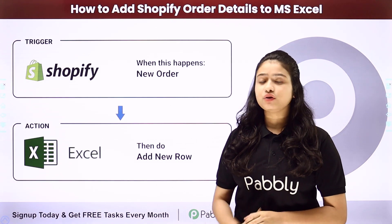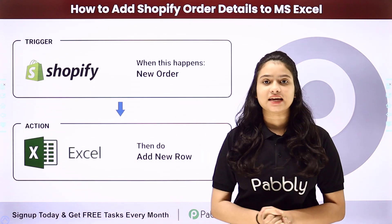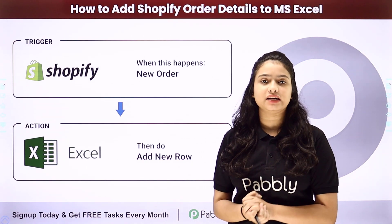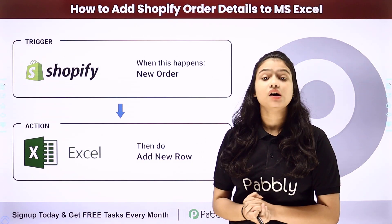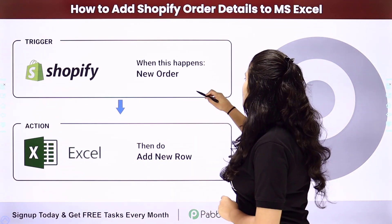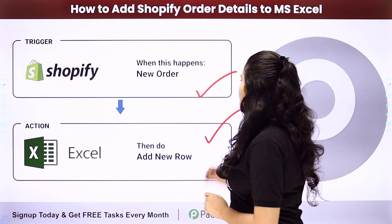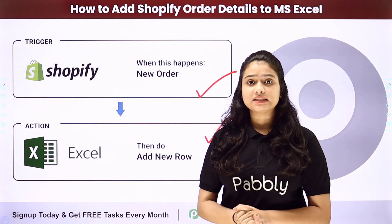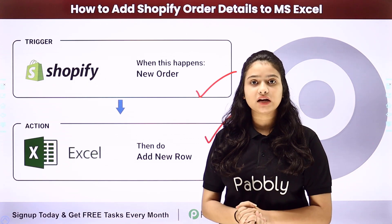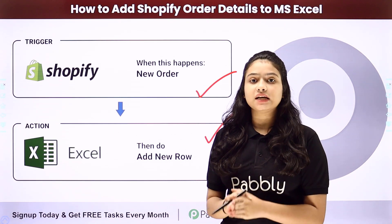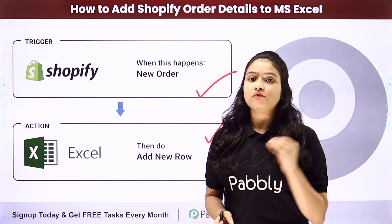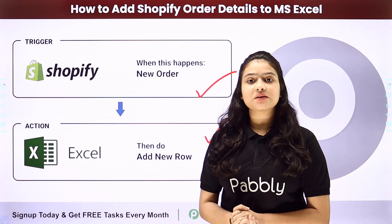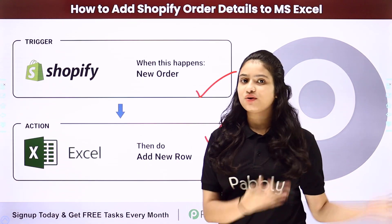To do that process automatically and effortlessly, you will have to integrate your Shopify account with MS Excel. And to do the same, we are going to use Pabbly Connect, which is an amazing automation and integration software. We have Shopify in our trigger and MS Excel in our action, and we will be connecting both of them using Pabbly Connect. Let me take you all to my screen.